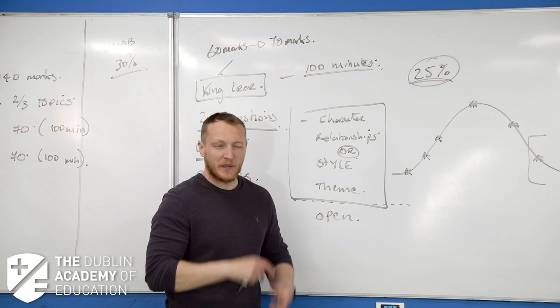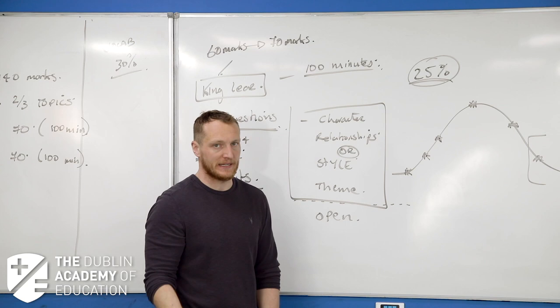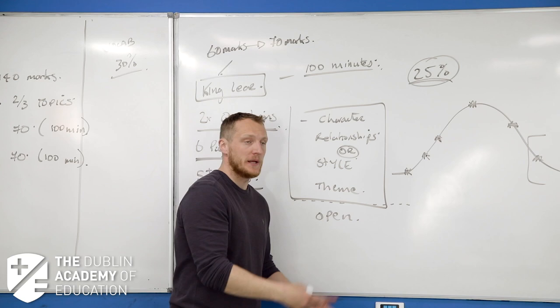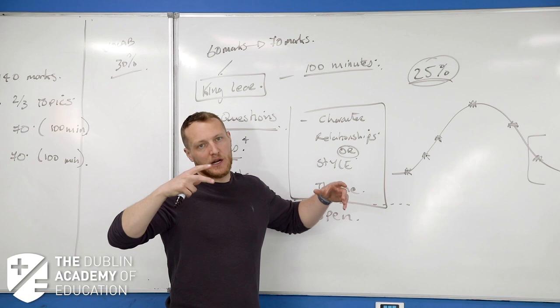If we play the Leaving Cert game and make predictions, a lot of people will get rid of King Lear. That means if you actually continue it on, the pool is smaller again, a higher chance to get further up that bell curve.